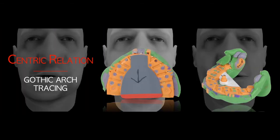This is called the gothic arch tracing. When you move the mandible through protrusion and lateral excursion, lines are drawn on the plate. With three movements — protrusion, right lateral excursion, and left lateral excursion — the arrow point mark on the tracing represents the centric relation position of this patient.